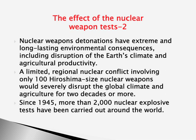The effects of nuclear weapons detonations have extreme and long-lasting environmental consequences, including disruptions of the earth's climate and agricultural productivity. A limited regional nuclear conflict involving only 100 Hiroshima-sized nuclear weapons would severely disrupt the global climate and agriculture for two decades — what is called nuclear winter — and nuclear famine may also occur. Since 1945, more than 2,000 nuclear explosive tests have been carried out around the globe.